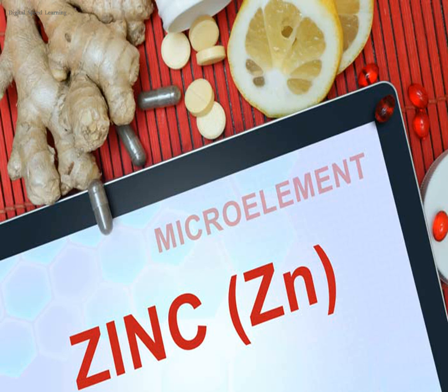Zinc is the 24th most abundant element in Earth's crust and has 5 stable isotopes. The most common zinc ore is sphalerite, or zinc blende, a zinc sulfide mineral. The largest workable loads are in Australia, Asia, and the United States. Zinc is refined by froth flotation of the ore, roasting, and final extraction using electricity — electrowinning.